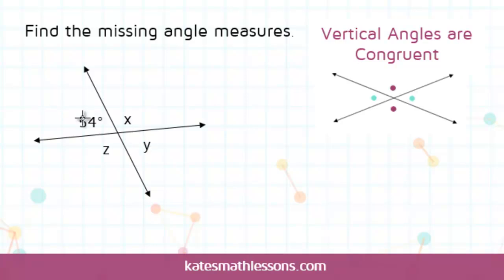54 and y are vertical angles, they're across from each other. So that means that y is also 54 degrees.